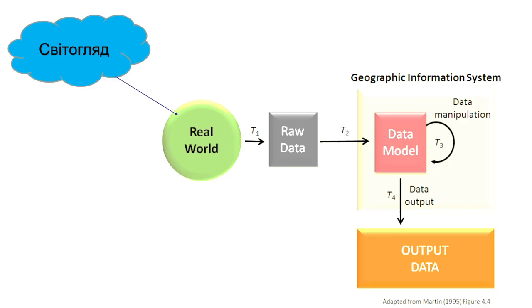The last step of this algorithm is data output, where we can present our data in different forms — for example, plot maps, sketches, 3D representations, and a huge variety of geo-images.